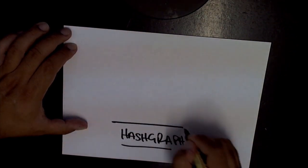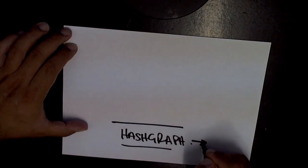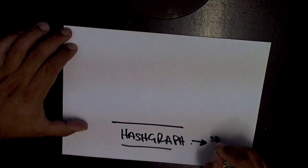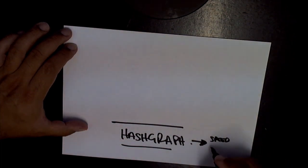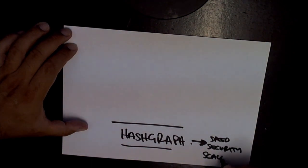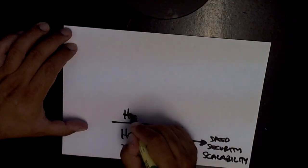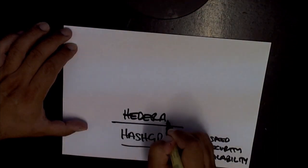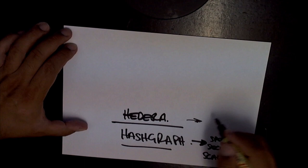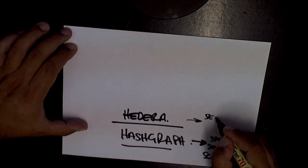That sits on the bottom, and this provides the speed, the security, and scalability through sharding. Then you've got the Hedera layer, which also produces security through its governance.